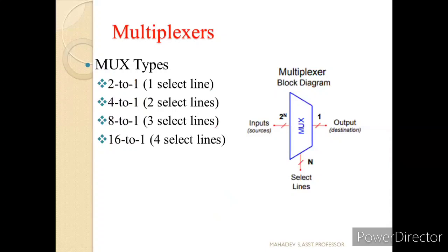Now let us see the different types of multiplexers. The frequently used multiplexers are: 2-to-1 multiplexer, having two inputs, one output, and one select line (since 2 to the power of 1 equals 2); 4-to-1, with two select lines (2 to the power of 2); 8-to-1, with three select lines (2 to the power of 3); and 16-to-1, with four select lines. So the general representation is 2 to the power of n inputs, one output, and n select lines.